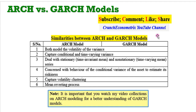We'll begin by looking at the similarities between ARCH and GARCH models. Both models capture the volatility of the variance, and both capture the conditional and time-varying variance. Both deal with stationary — which is time-varying mean — and non-stationary, which involves time-varying mean of a series. Both are concerned with the behavior of the conditional variance of an asset and how to estimate its riskiness. Both models capture volatility clustering, and both have mean-reverting processes.